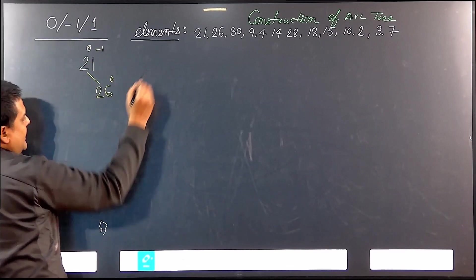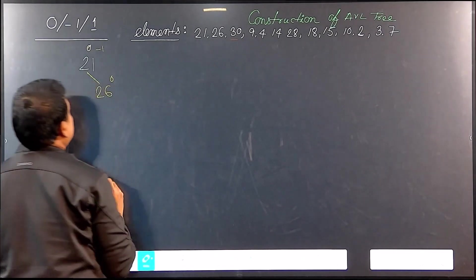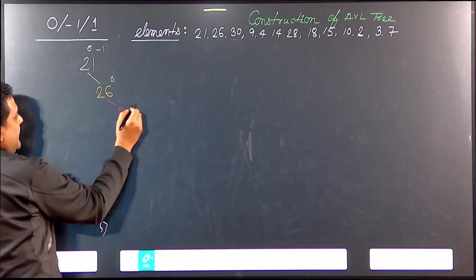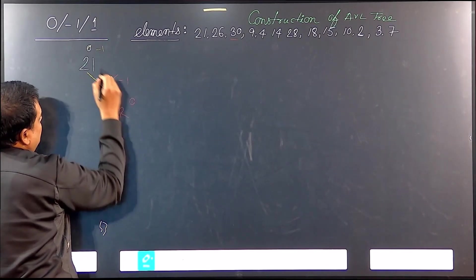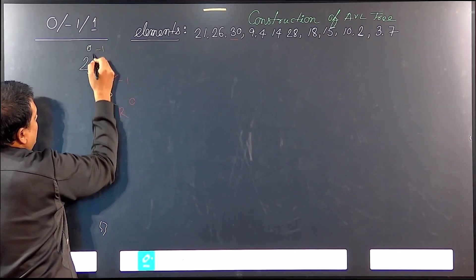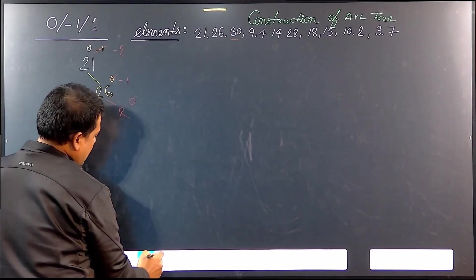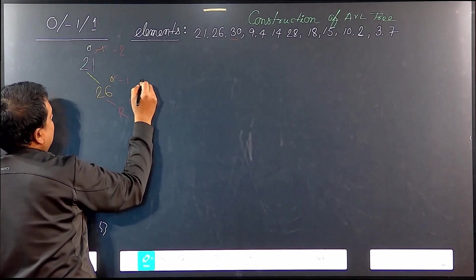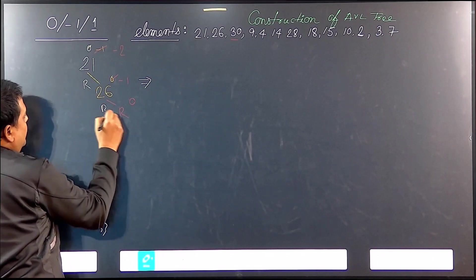Now we are having another element, that is 30. We are going to insert 30. So 30 will be to the right of 26. The balance factor values are: 0 for 30, minus 1 for 26, and minus 2 for 21. So here is the problem — we are getting an imbalance at 21.